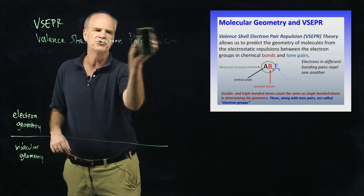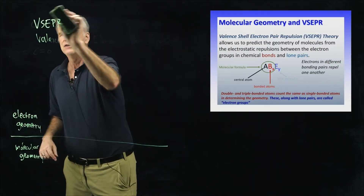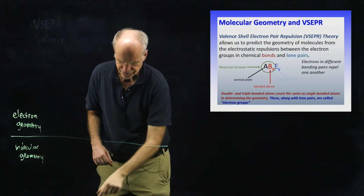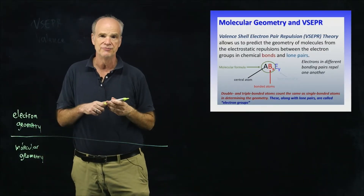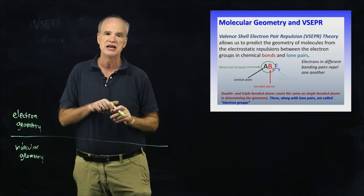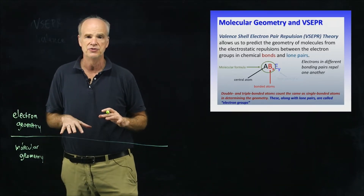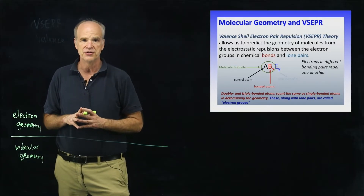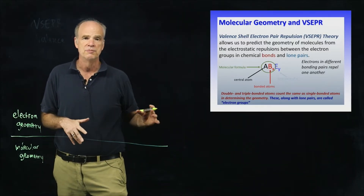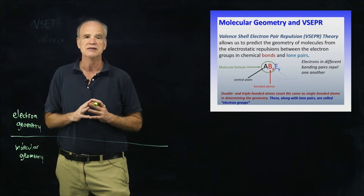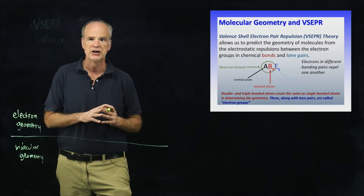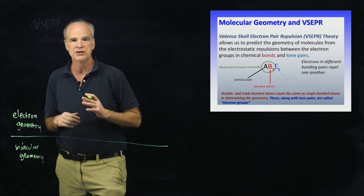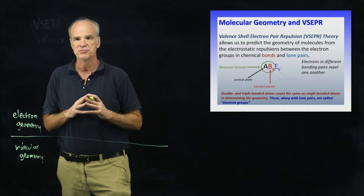Let me look quickly at three molecules and describe how we would figure out their three-dimensional shape using VSEPR theory. After that, I'll go over some definitions you need to know, and then we'll go over more particular examples of finding molecular shapes from Lewis dot structures.